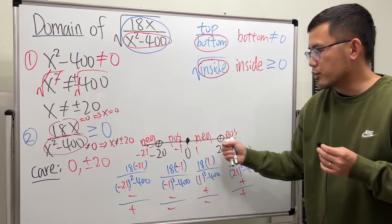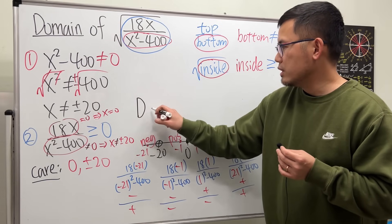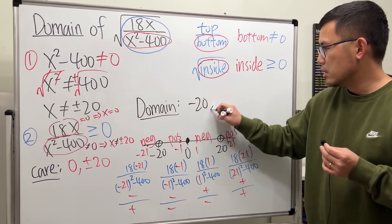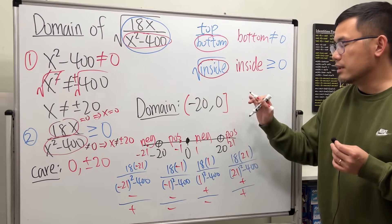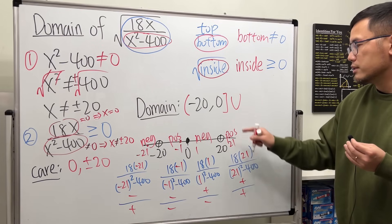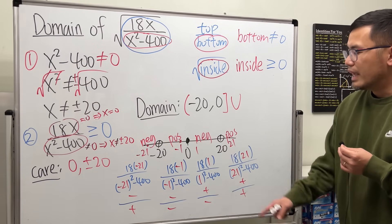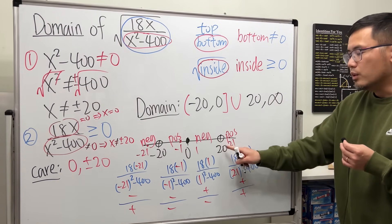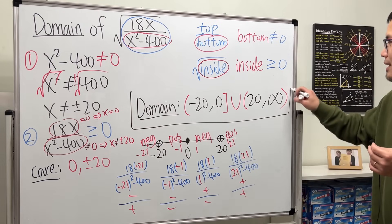So the valid intervals are between negative 20 and zero, and from 20 to infinity. In interval notation, the domain is: negative 20 to 0, where negative 20 is excluded (parenthesis) and zero is included (square bracket), union 20 to infinity, where 20 is excluded (parenthesis) and infinity is always excluded (parenthesis). That is the domain for the function.